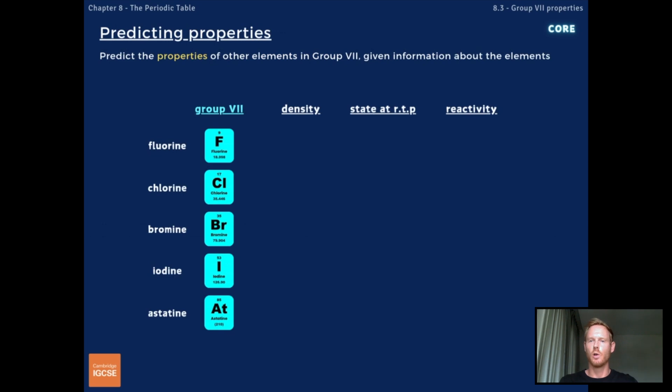We can use information about chlorine, bromine and iodine to predict the properties of the other Group 7 elements. For example, because density increases further down the group, we know that at room temperature and pressure, fluorine will be a gas because it sits above chlorine in the table, and astatine will be a solid because it sits below iodine.